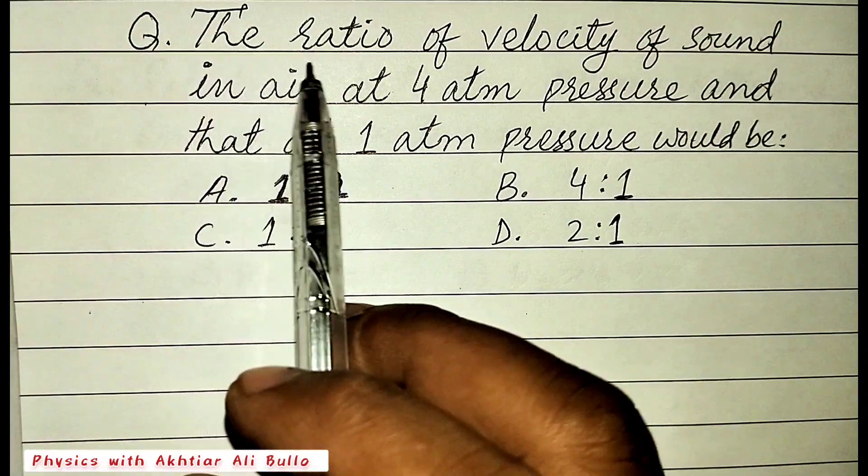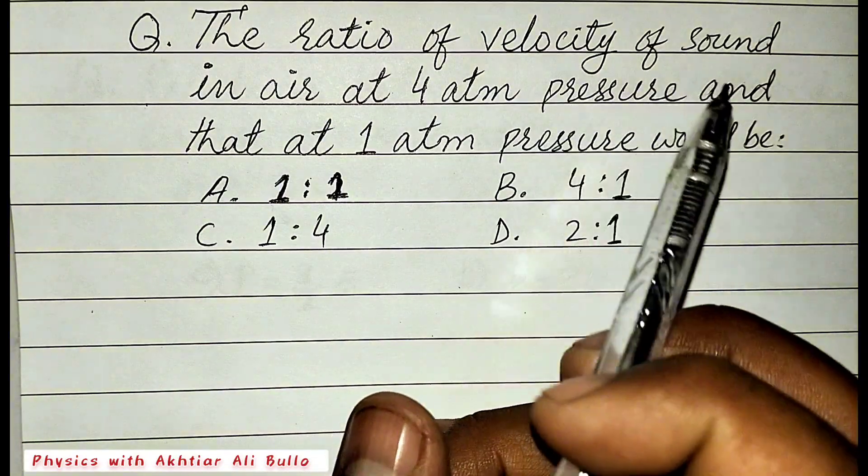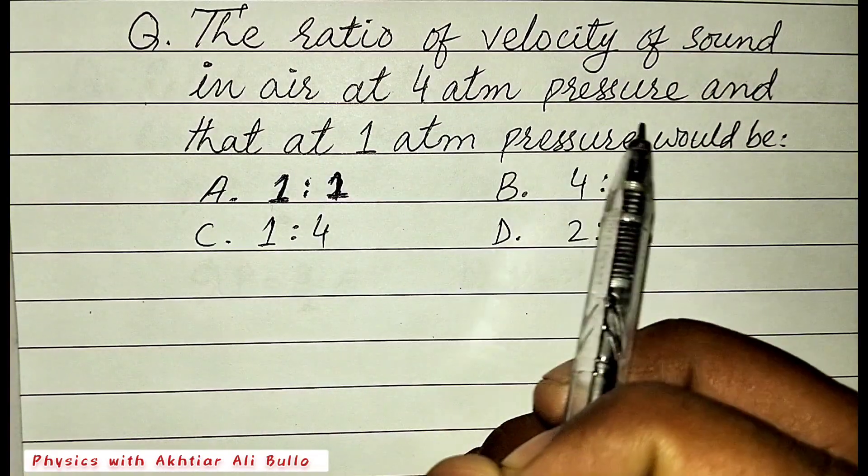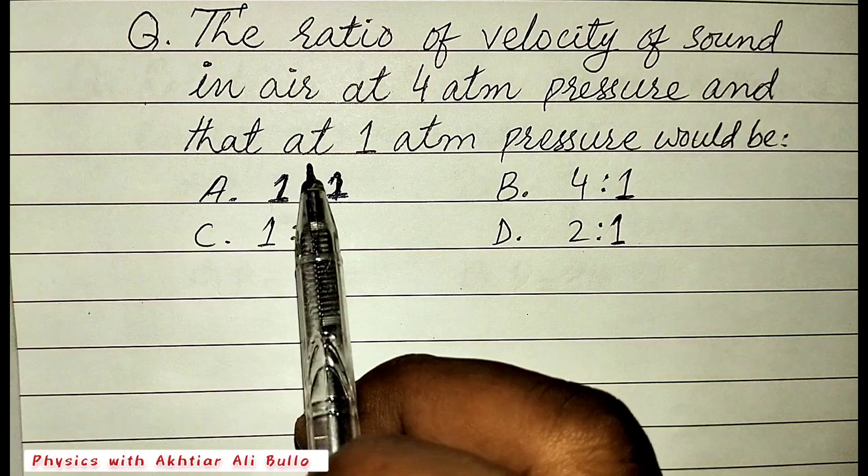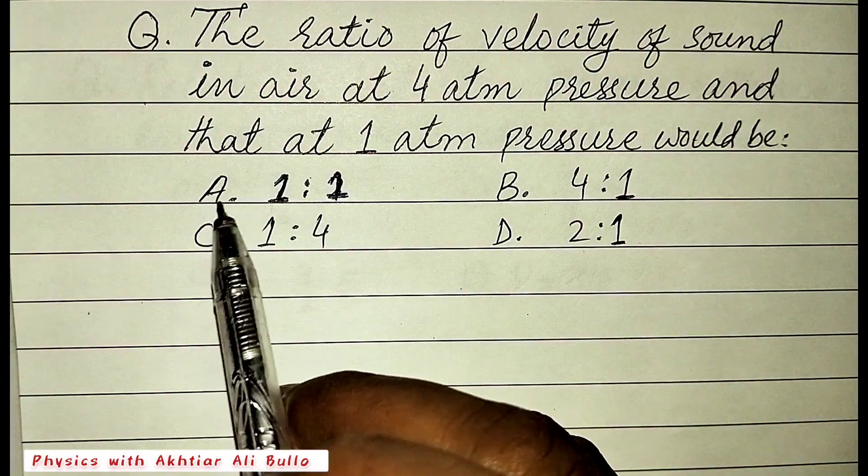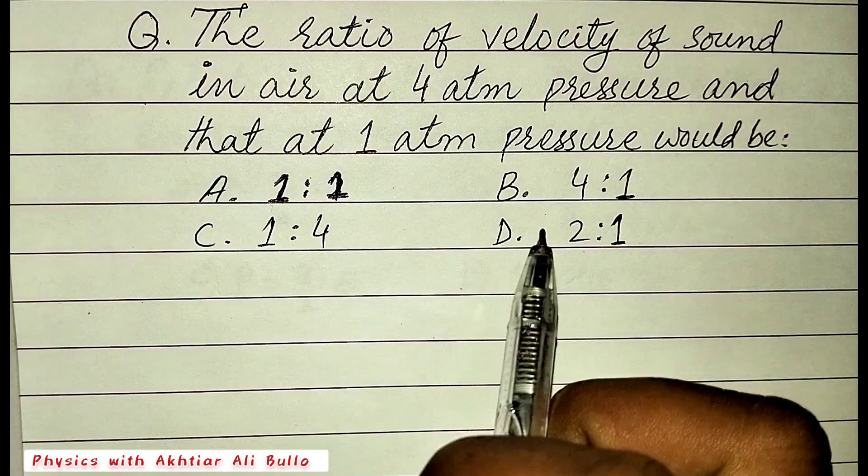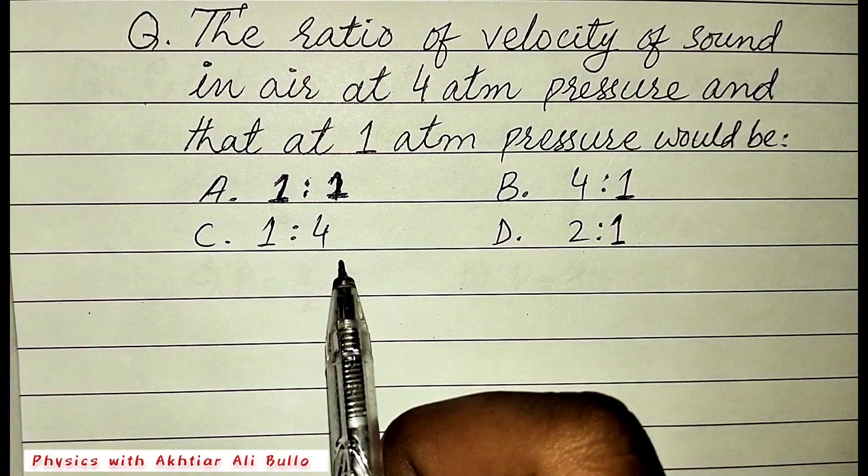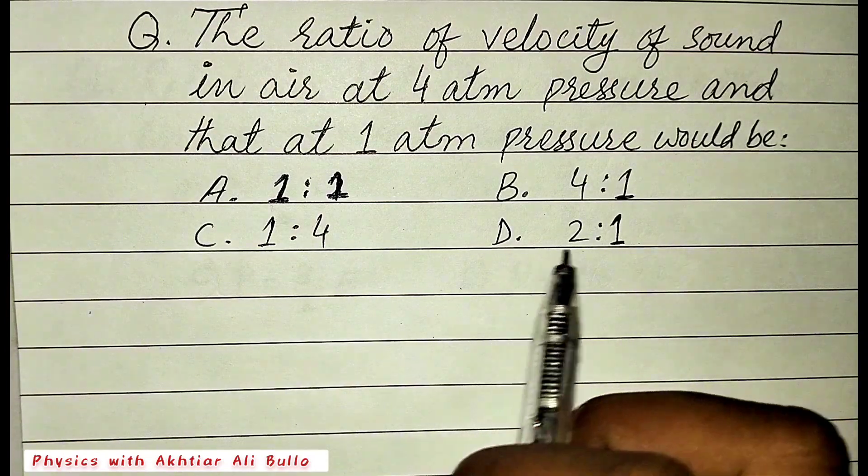The question is, the ratio of velocity of sound in air at 4 atm pressure and that at 1 atm pressure would be: A. 1:1, B. 4:1, C. 1:4, D. 2:1.